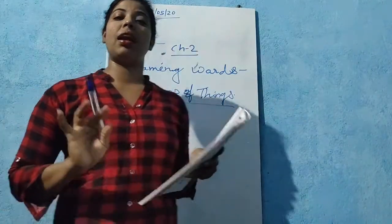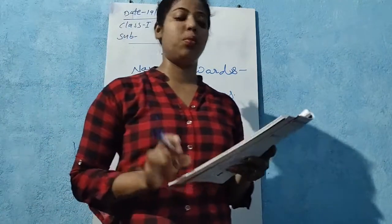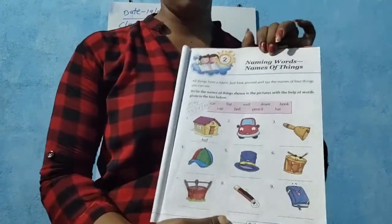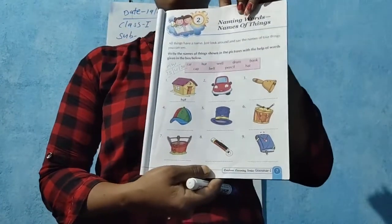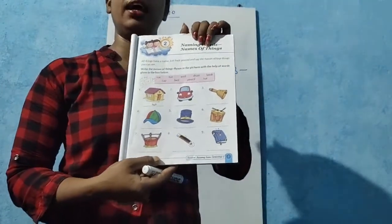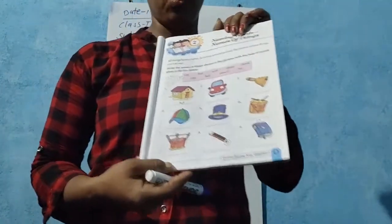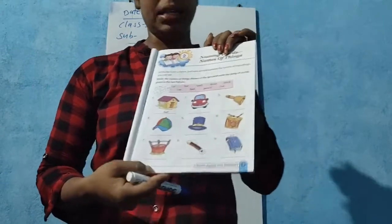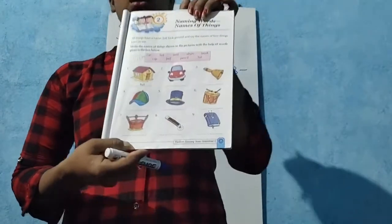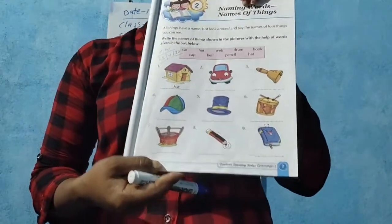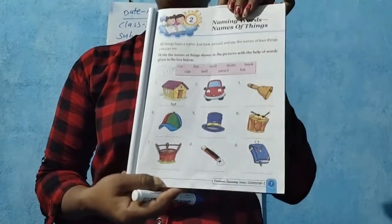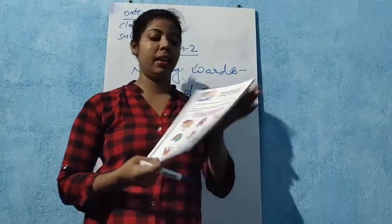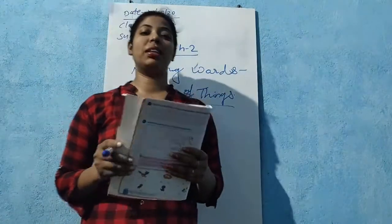Naming words means everything has a name. Read this book and understand. This is homework — if you don't have a book, write what you see in this video in your copy. Thank you so much.